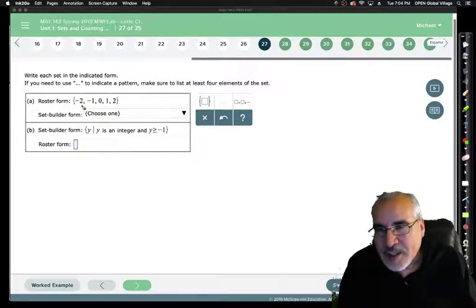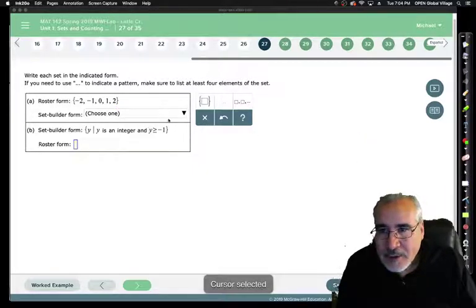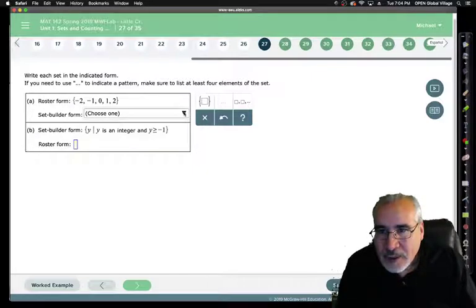So it's the integers greater than or equal to negative 2, less than or equal to 2. That's one way to say it, but we have to choose from the list. There's more than one way to say things, right? Everything's socially constructed.